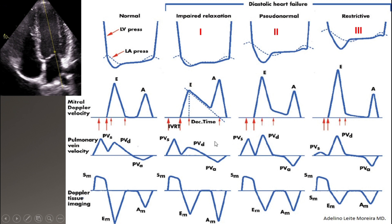With increasing left atrial pressure and worsening diastolic dysfunction, when pressure rises in the left atrium at the start of early diastole, blood rushes very fast into the left ventricle. The pressure at the E point drops suddenly in the left atrium, causing blood from the pulmonary vein to flow faster into the left atrium. D increases, becoming higher than the S wave. With continued worsening diastolic function, D becomes much higher than S.